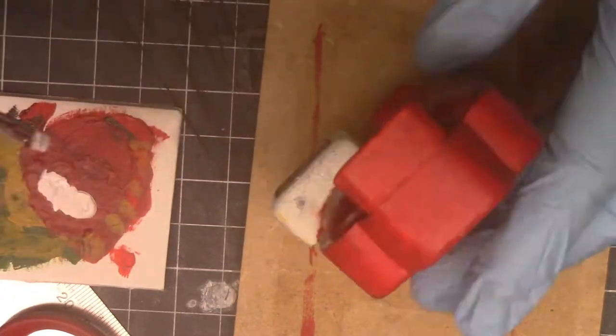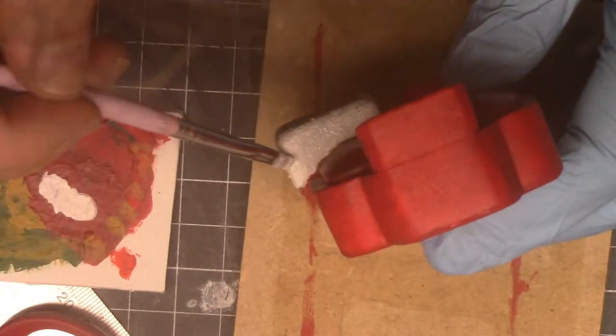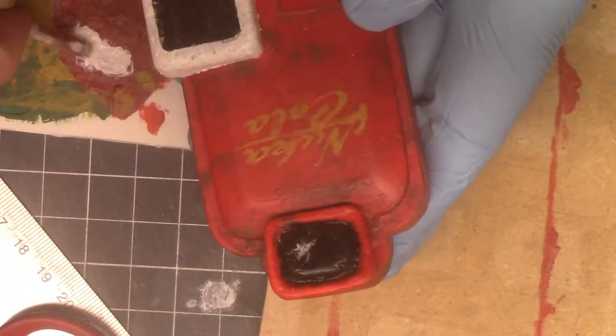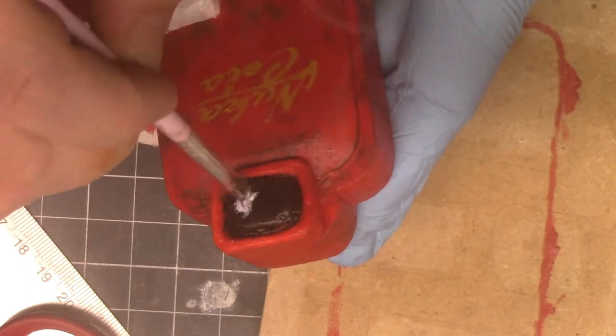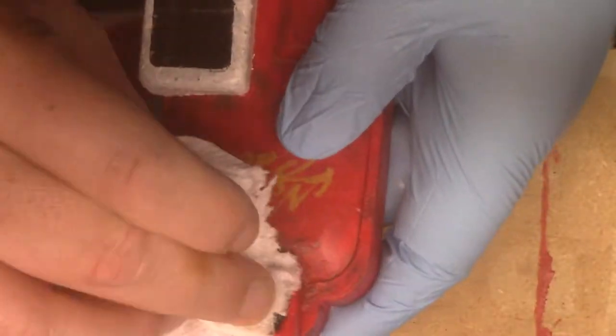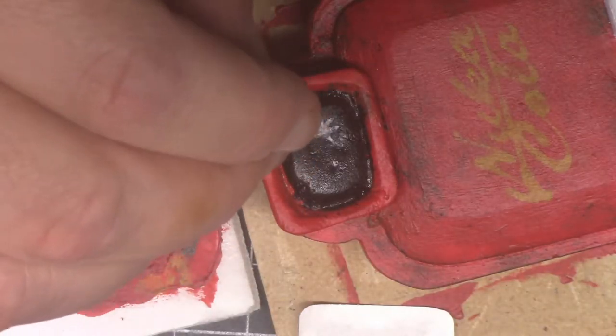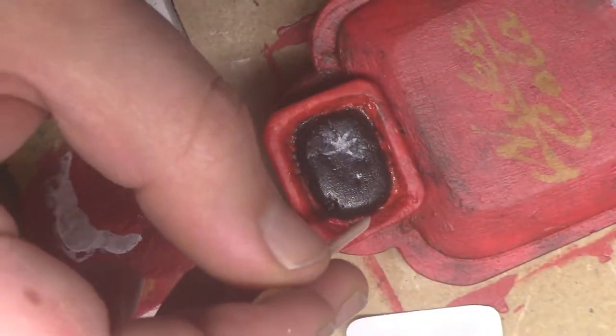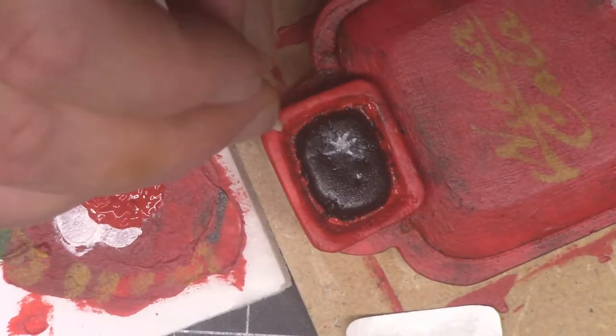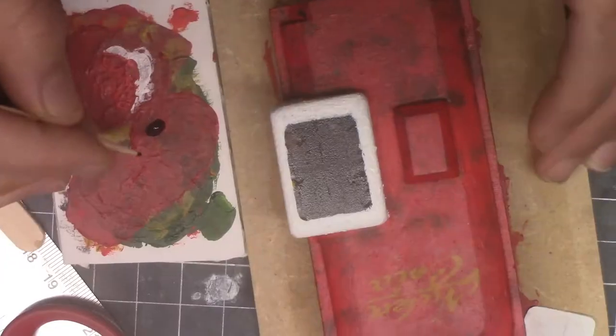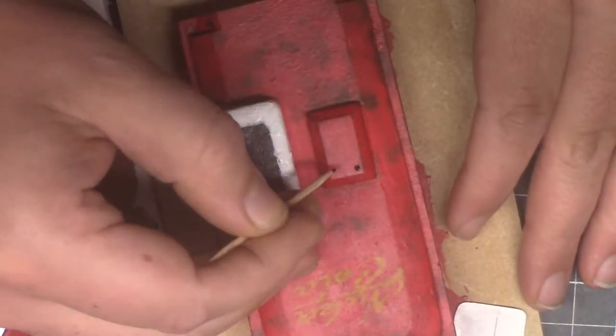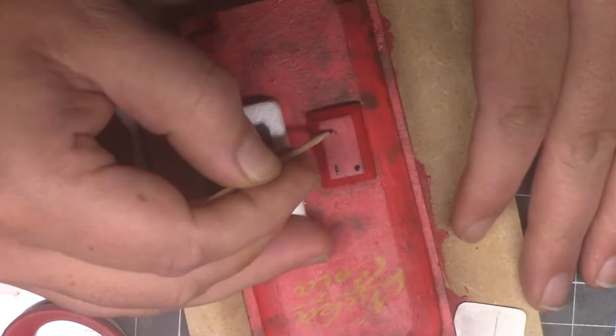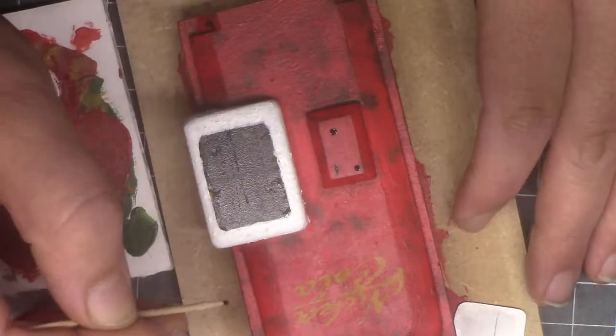I then did the small details of filling in the area around the screen and adding the slots and parts to the coin operated area. I would have liked to have had the coin parts three-dimensional, but I couldn't figure out a decent way to do it with the tools I had, so I decided to just paint them on.